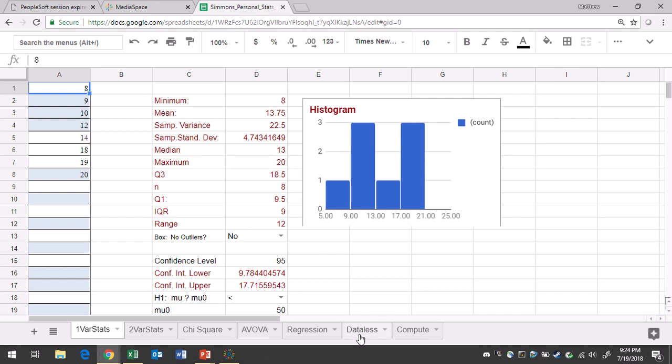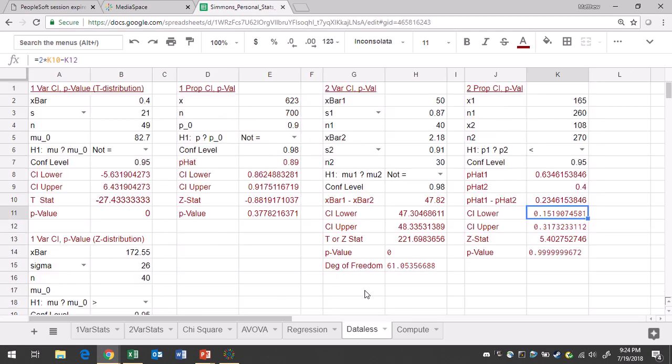Go to the data list tab. Go to the two variable confidence level p-value region. You'll notice that there's a place to put the mean, standard deviation, and the sample size for both groups. So starting off with group one, the mean is 2.88. The sample standard deviation is 0.05. Sample size is 65. Group two, 2.92. Sample standard deviation is 0.08 and sample size is 65.